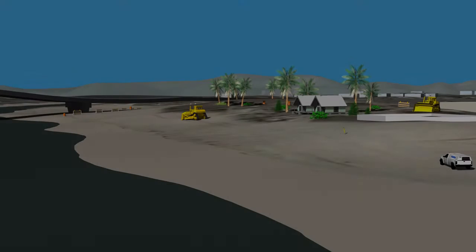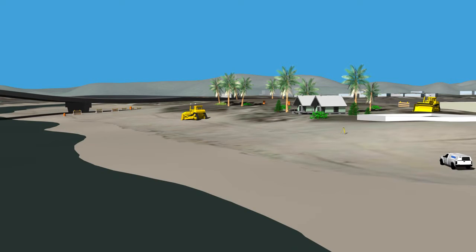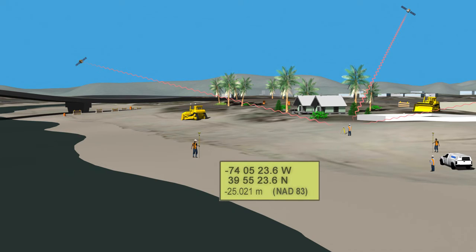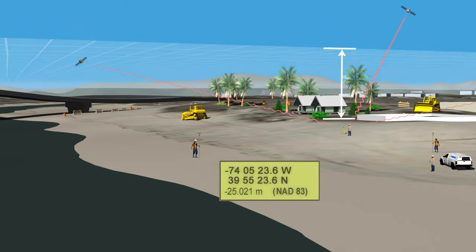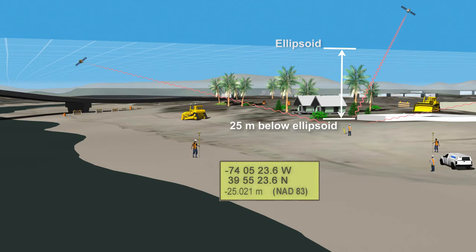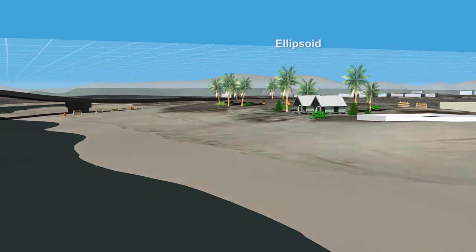Now, turning our attention to onshore construction. Before a new house is built, a surveyor needs to make sure the foundation is built above the high-risk floodplain. The surveyor uses professional GPS equipment to compute a highly accurate height of the ground relative to the ellipsoid reference frame. Based on the survey, we know the base of our house is 25 meters below the ellipsoid. But what does that tell us about the floodplain?